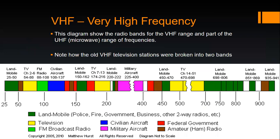We can look at the radio spectrum and talk about different allocations the government makes. This chart shows VHF allocations, though it's out of date because we no longer have the analog stations — where you see TV channels 2 to 6, 7 to 13, and 14 to 51, those have been reallocated for other uses.